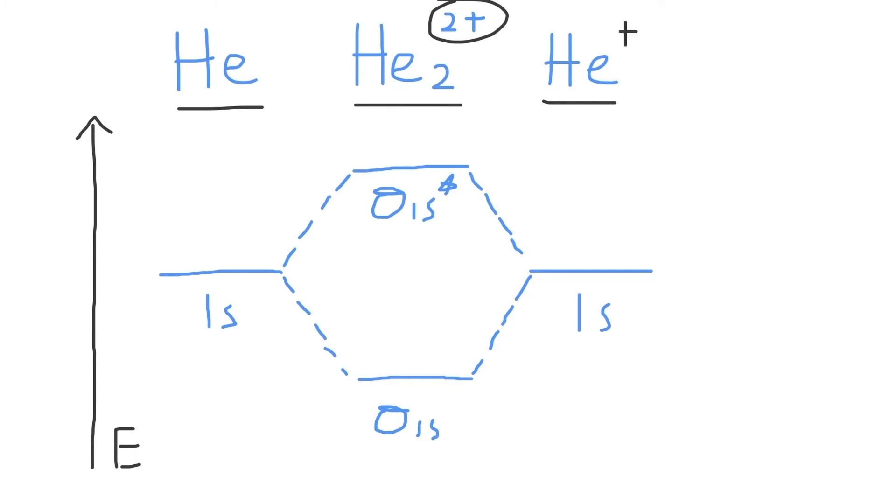This means that each helium atom will have simply one electron instead of two, due to our positive charge. This means that the He₂ 2+ ion will have a total of two valence electrons.